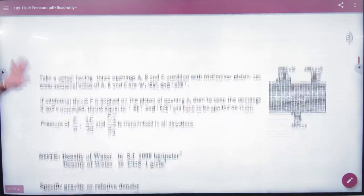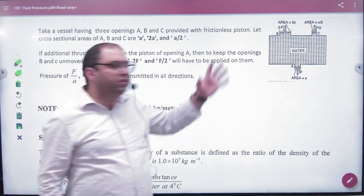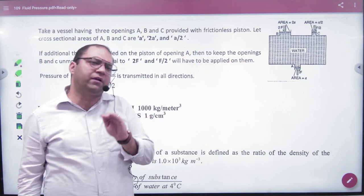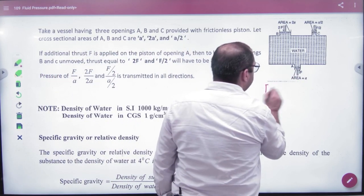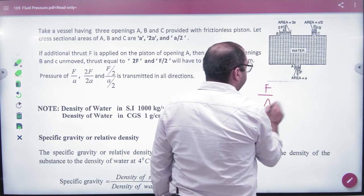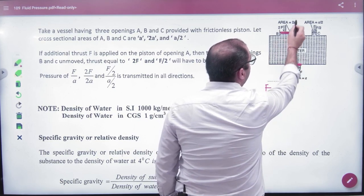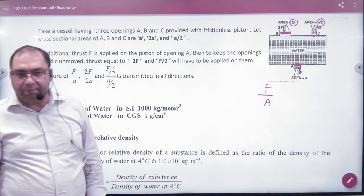How? I will show you. Suppose you have a fluid completely closed in a container. Here, you put a piston for your experiment. This piston has area A. Here, the piston area is 2A. And here, the piston area is A by 2.